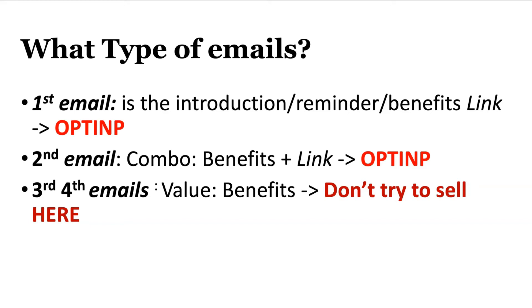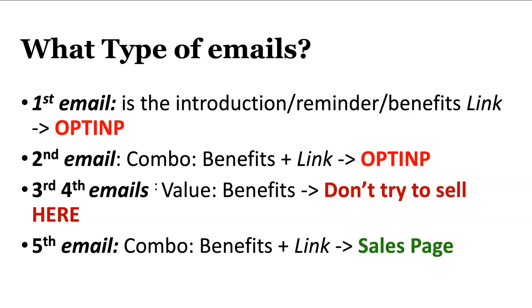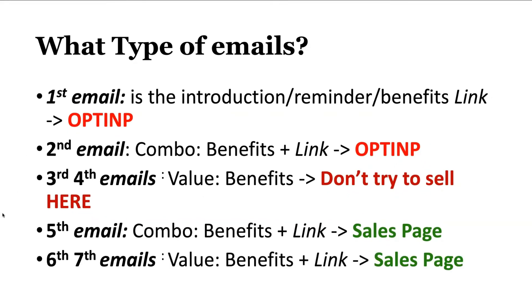Emails three and four should be pure value emails: benefits, benefits, benefits. I'll show you where to get the benefit content from. Don't try to sell here — don't even put a sales link. They'll think, 'Wow, he's not trying to sell me, he's just trying to help me.' This positions you for future sales. Email five is a combo: benefits plus a link to the sales page. Emails six and seven beef up the benefits even more and also send them to the sales page.